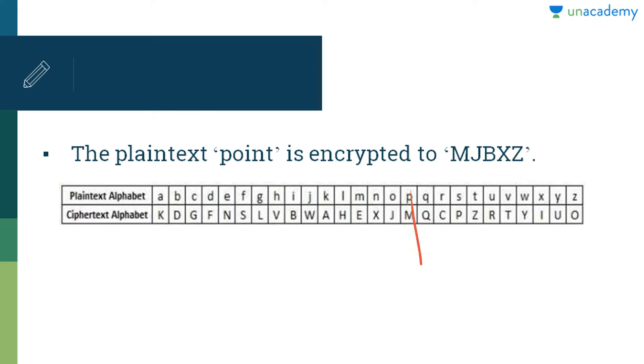your P becomes M, your O becomes J, I becomes B, N becomes X, and your T becomes Z. So your point is encrypted to M, J, B, X, Z which becomes your ciphertext.